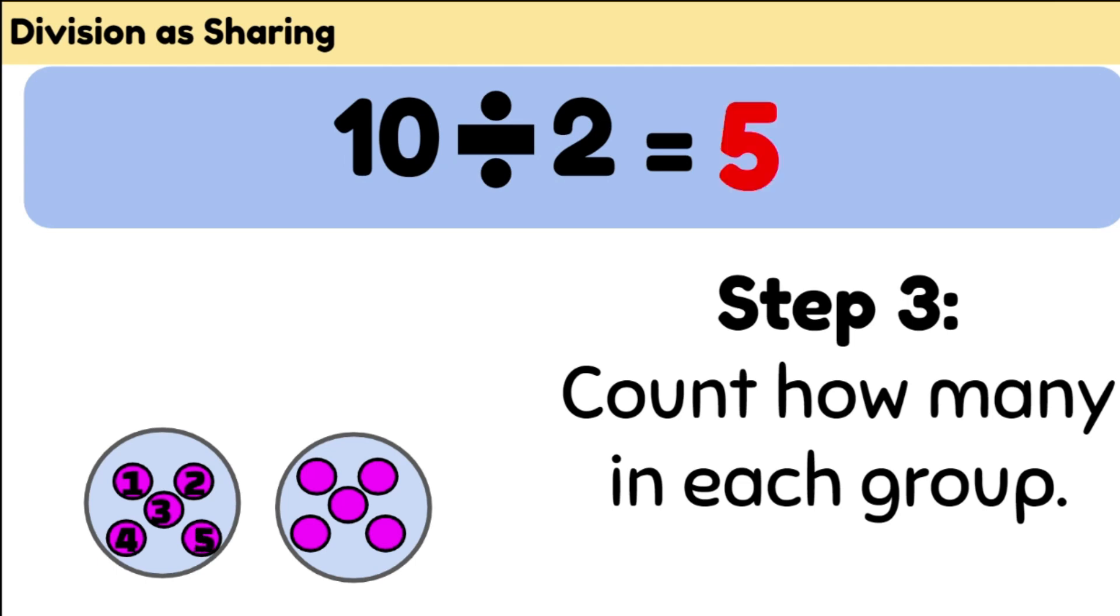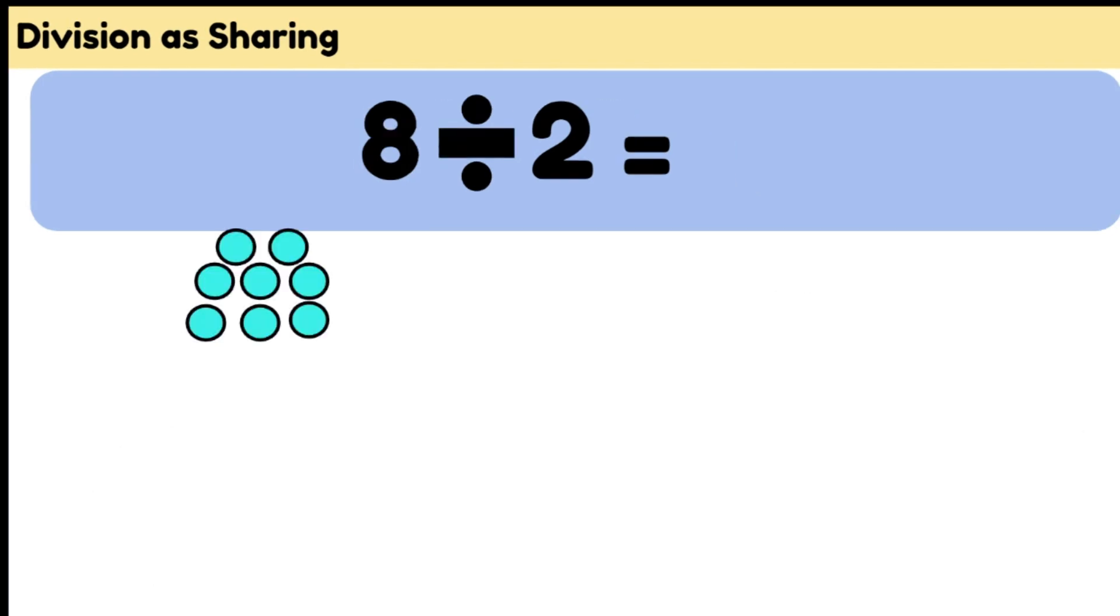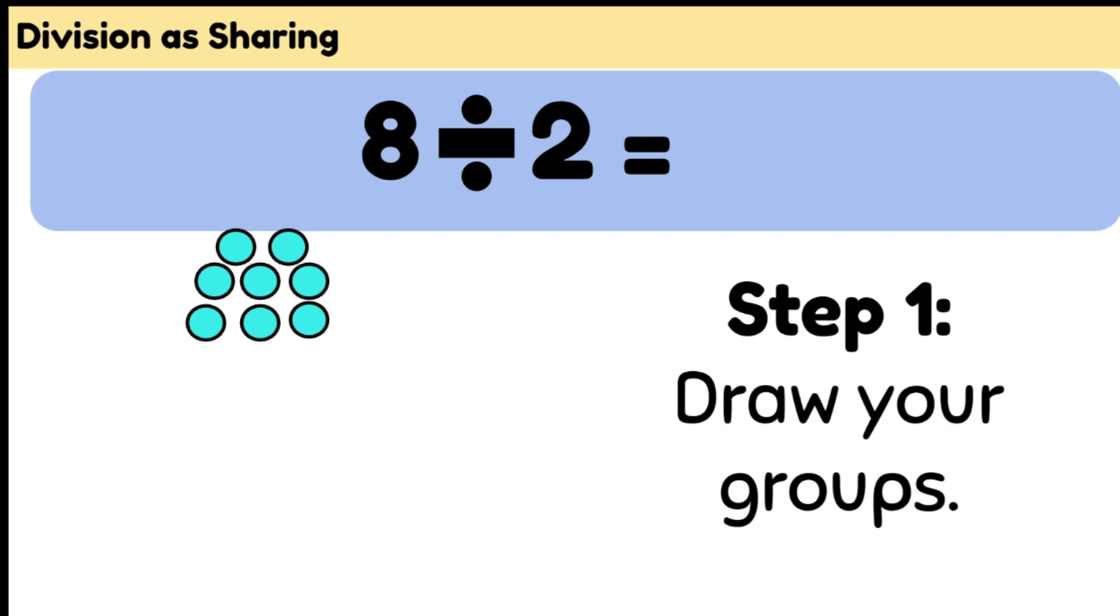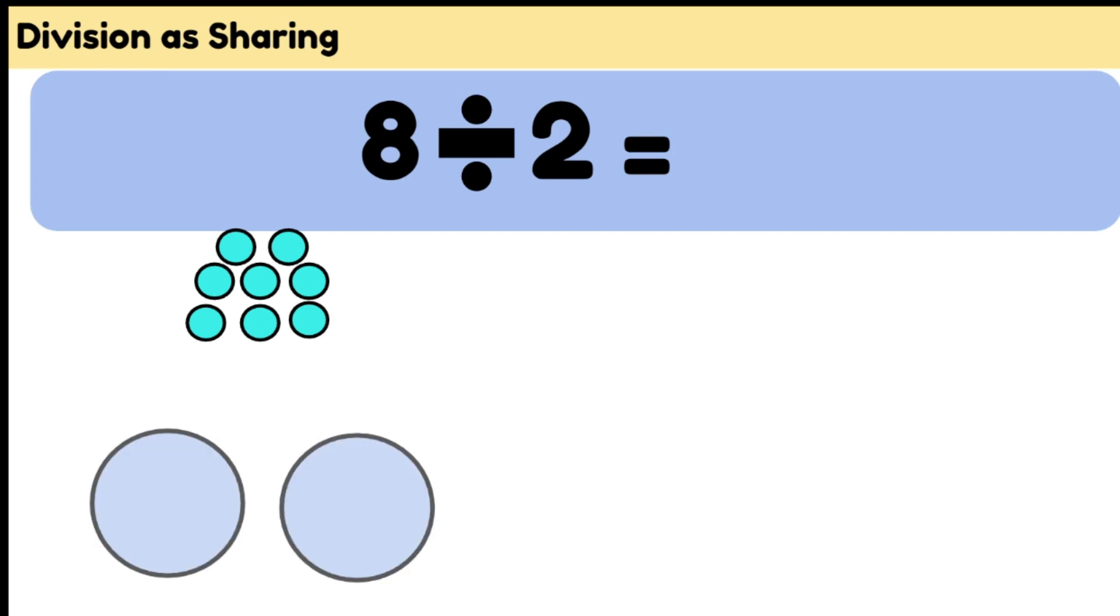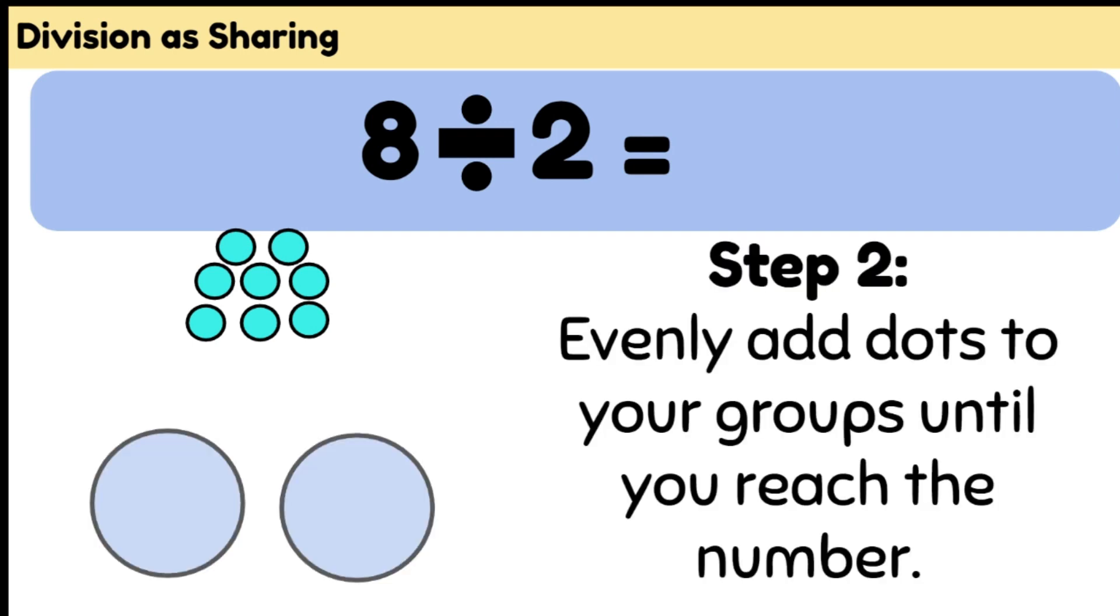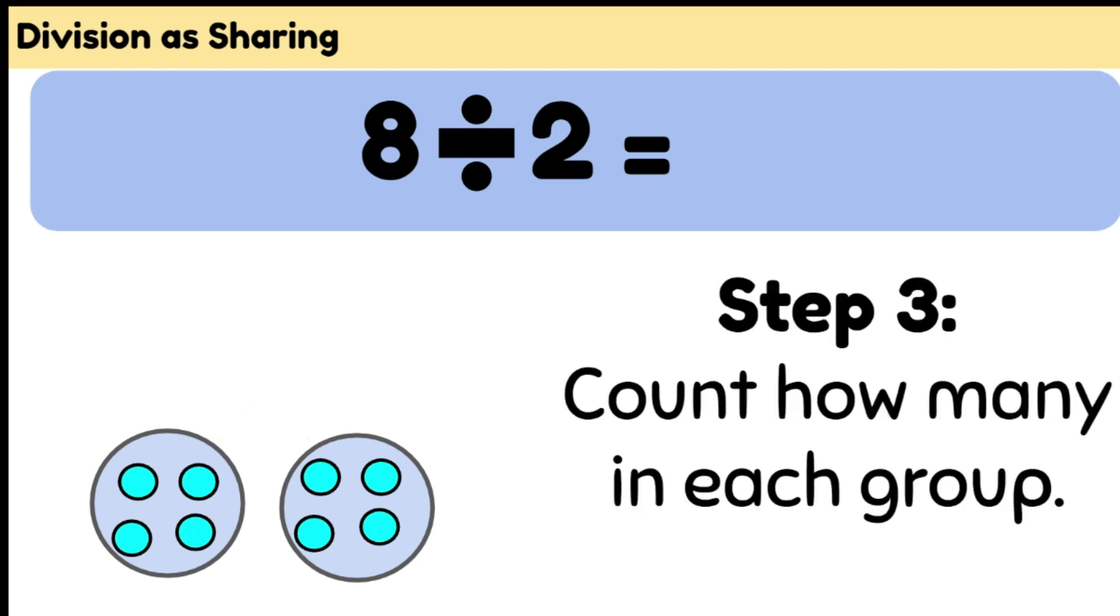Let's try another problem: 8 divided by 2. First we're going to draw our groups. We're going to need two groups for this problem as well. We're going to share out eight dots between the two groups. You need to make sure that we make the groups equal. Now we're going to count how many in each group. There are four dots in each group and four becomes our answer.